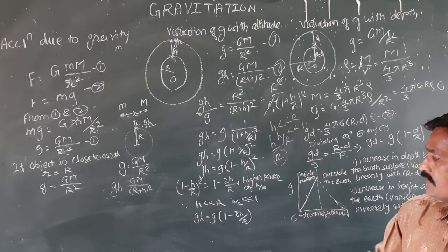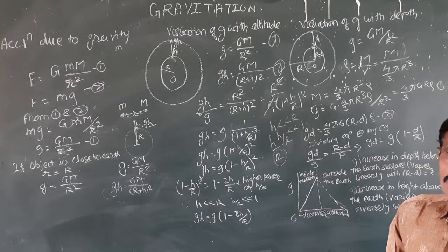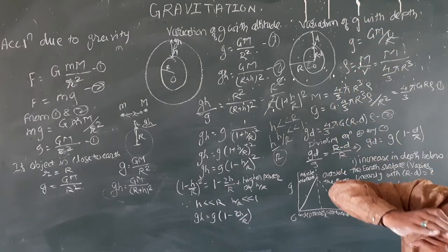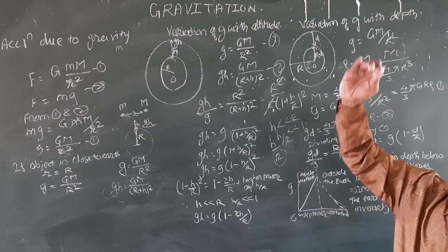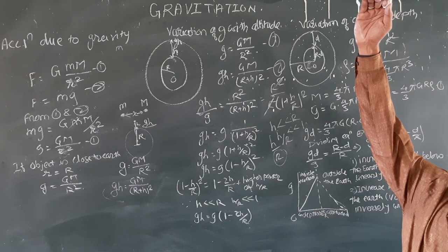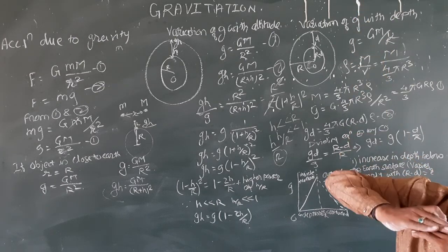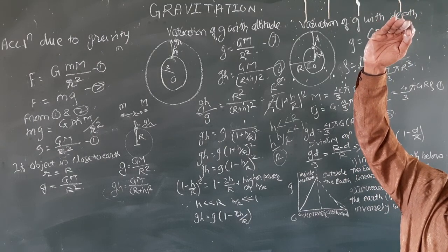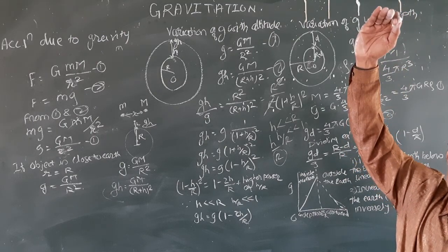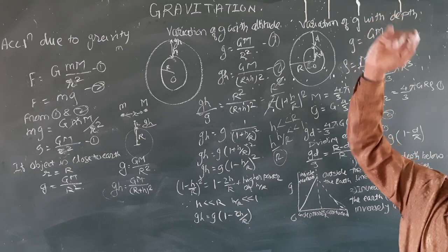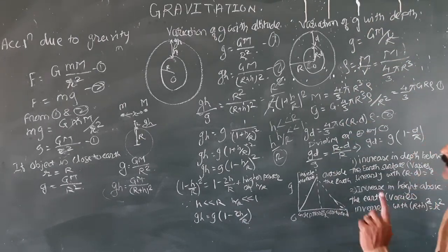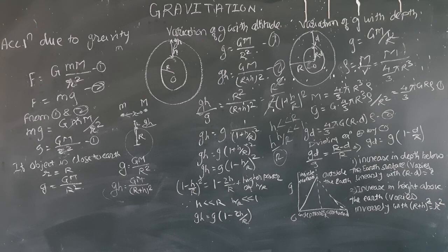As we move away from the earth, the acceleration due to gravity decreases. This is the variation of g with altitude — g decreases as we go to higher altitudes.